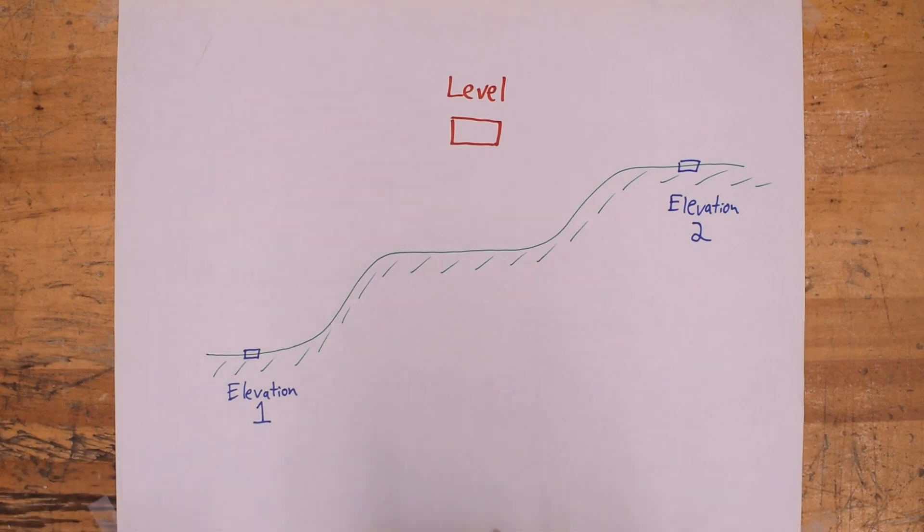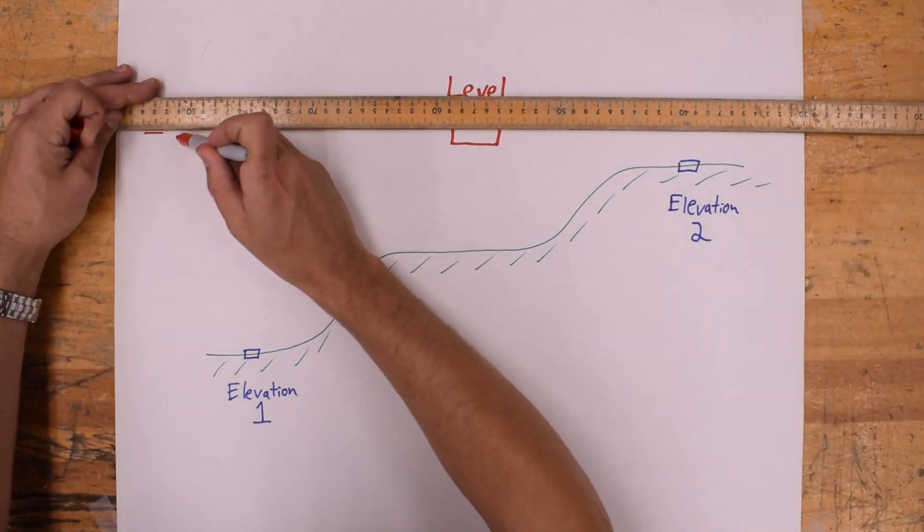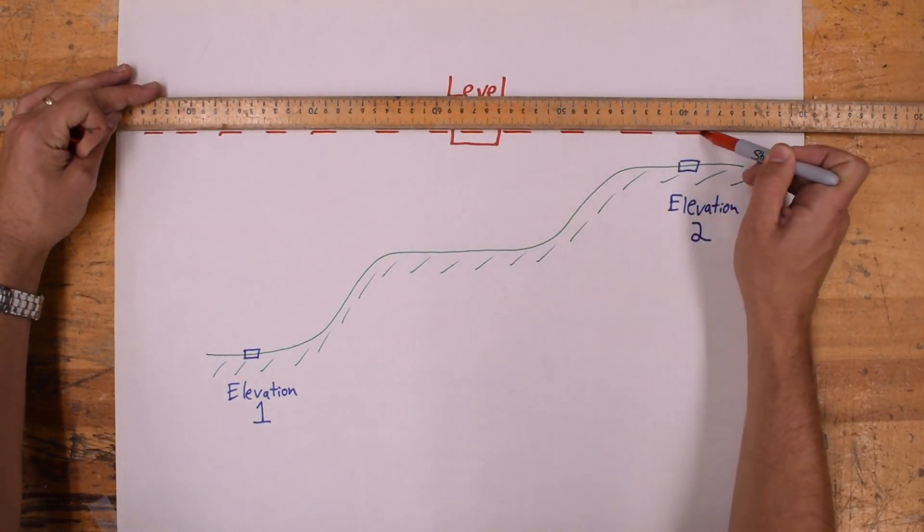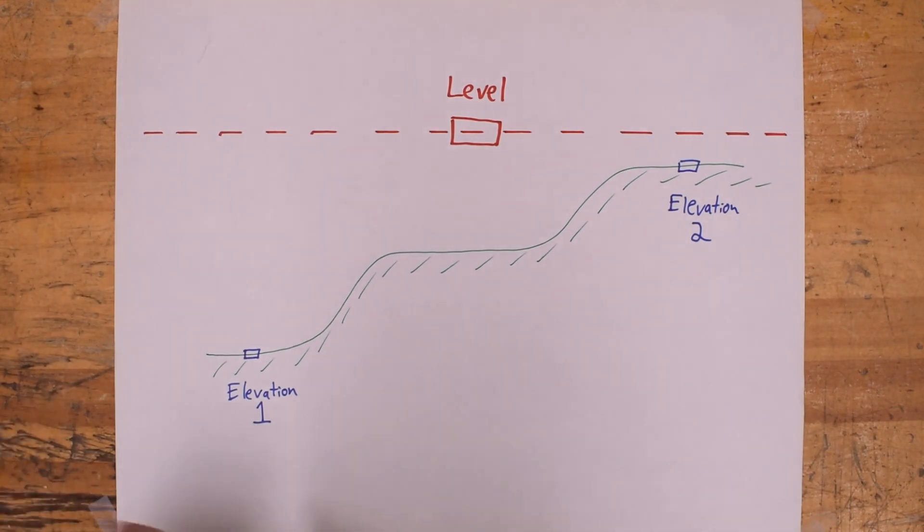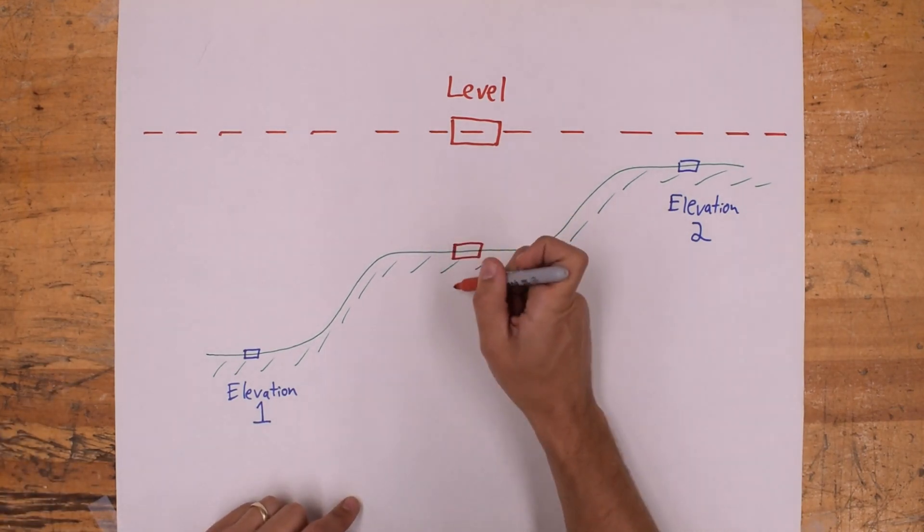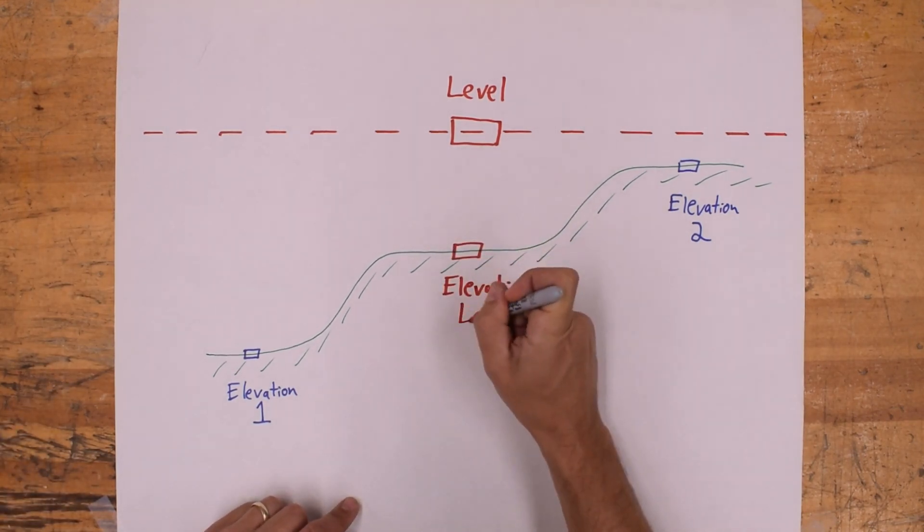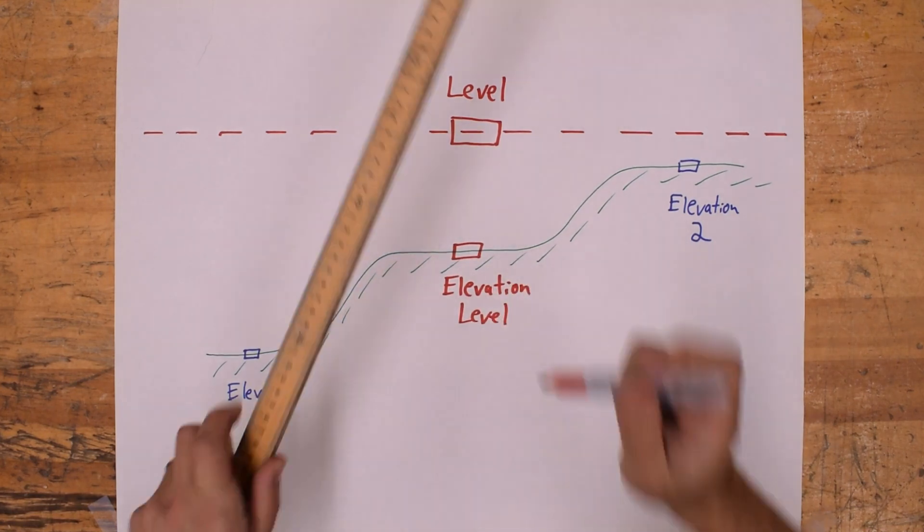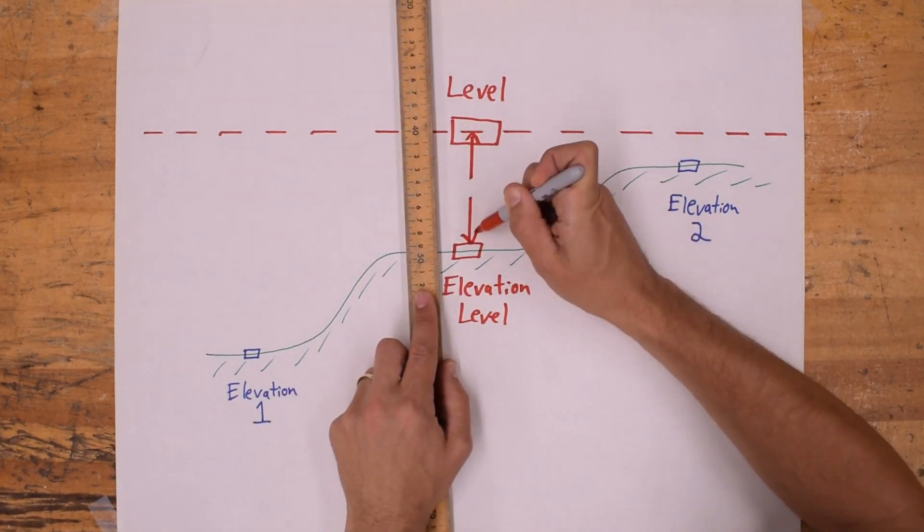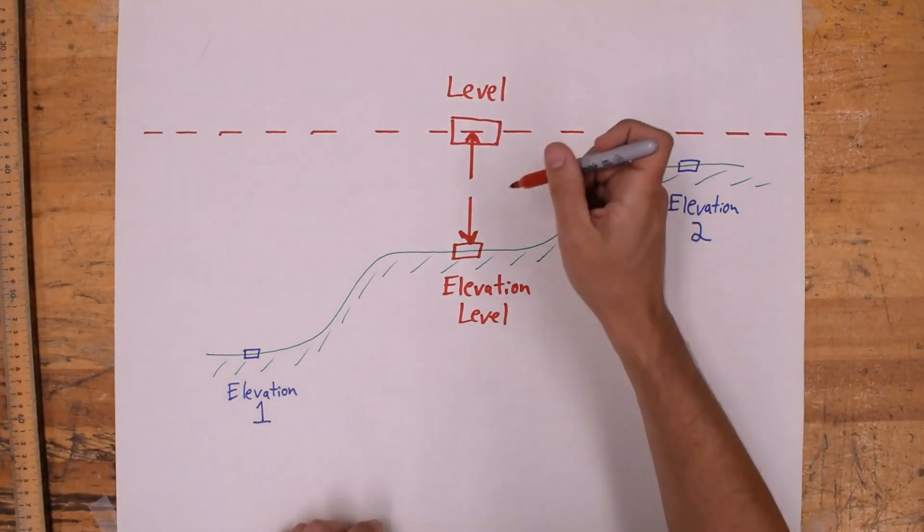Here I'm drawing my level itself and a horizontal line, which is the eyesight of the level. Now the level is set up over an arbitrary elevation level and has an arbitrary height of the instrument.